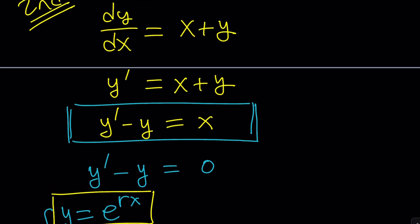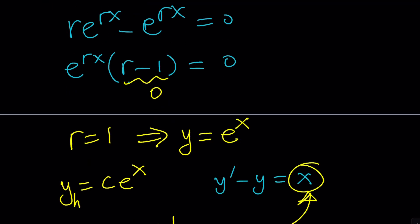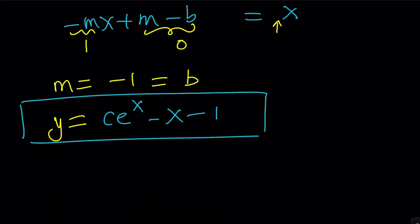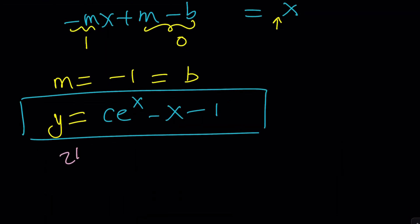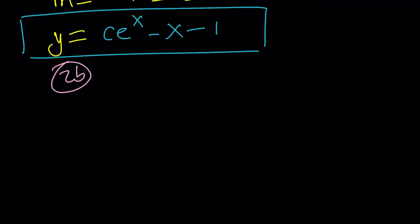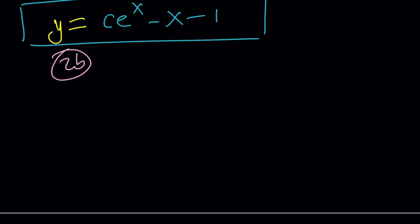So that was the second solution — specifically the first branch, which I'll call 2a. Now we're going to talk about 2b. Method 2b uses pretty much the same approach — y prime equals x plus y after flipping both sides — but it uses a substitution as a variation.